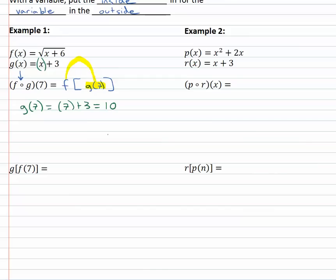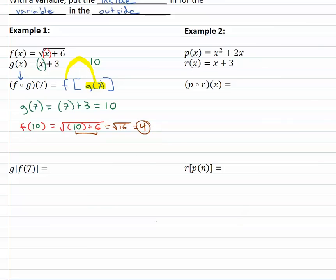Now that result — that ten — is going inside the f function. We're going to find f of ten, which means in f where we see x, we replace it. The square root of x plus six is now the square root of ten plus six. The result immediately goes into the next function, then we simplify: ten plus six gives us the square root of sixteen, which is just four. So seven went into g, it became ten, which went into f, and it became four.